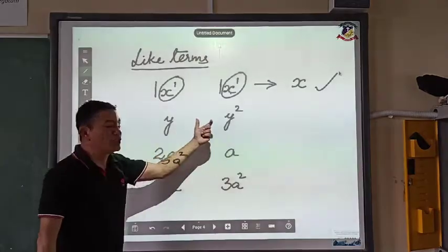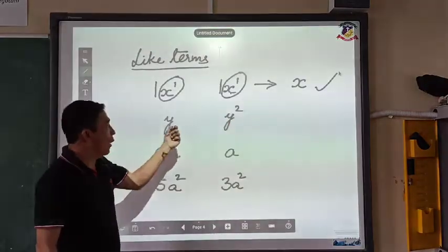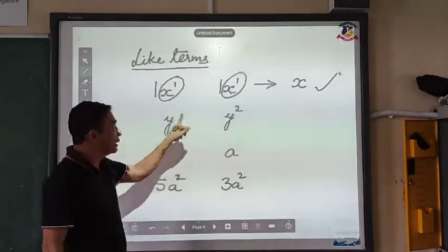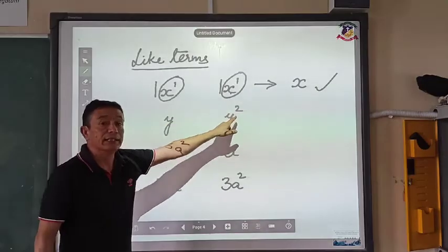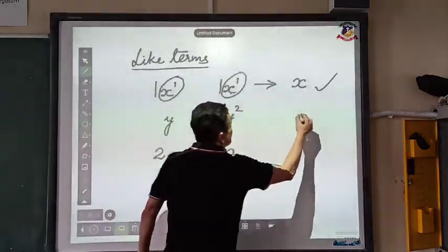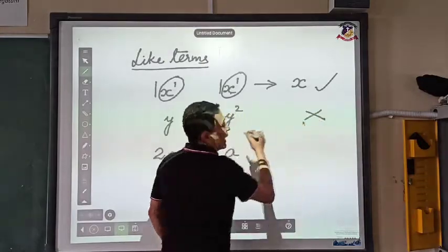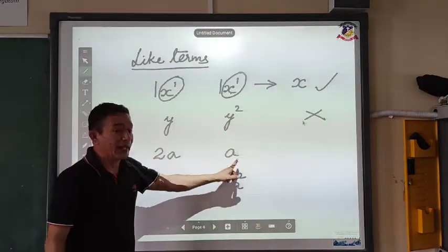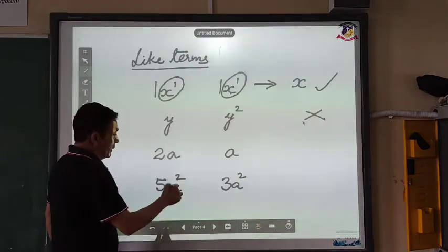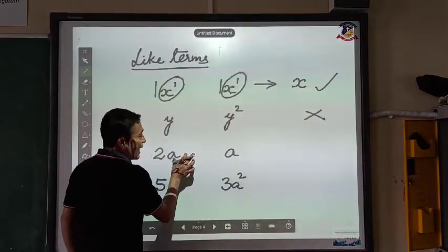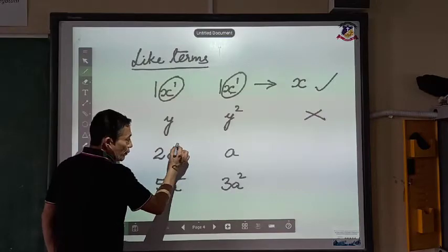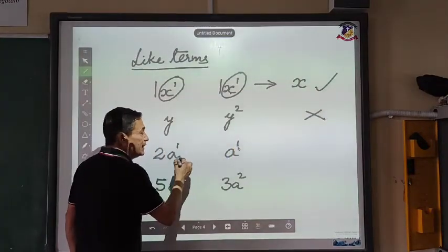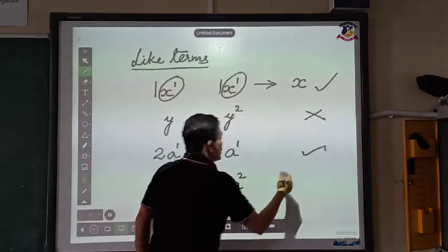If I look at y and y squared — the alphabets are the same, but the powers of the alphabets are different. Therefore, these are unlike terms. If I look at 2a and a, both have a, and the power of a is 1 in both. Therefore, these two are like terms.